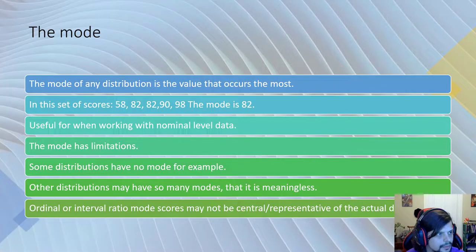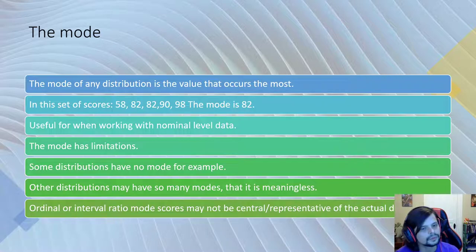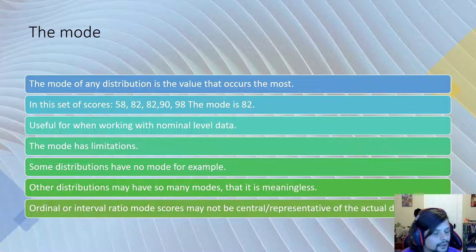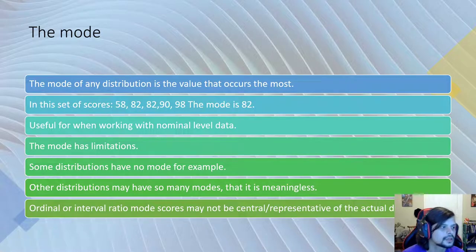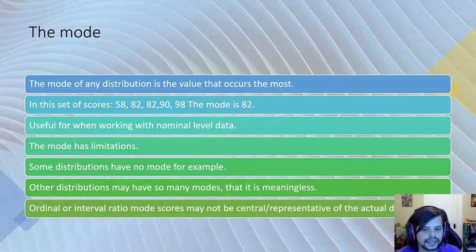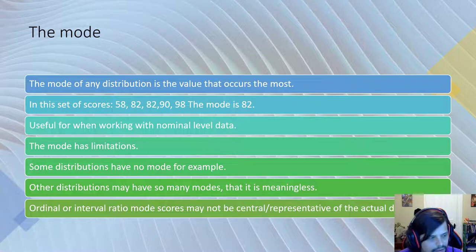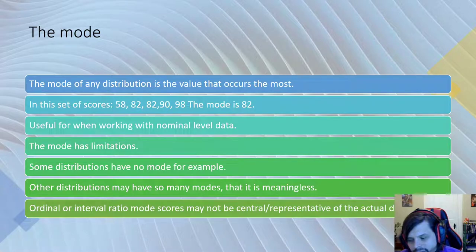The mode in any distribution is the value that occurs the most. So for a set of scores: 58, 82, 82, 90, 98 — the mode is 82 because it occurs twice, the most of any value. The mode is useful when working with nominal level data, which is categorical data where there's no real ranking value.